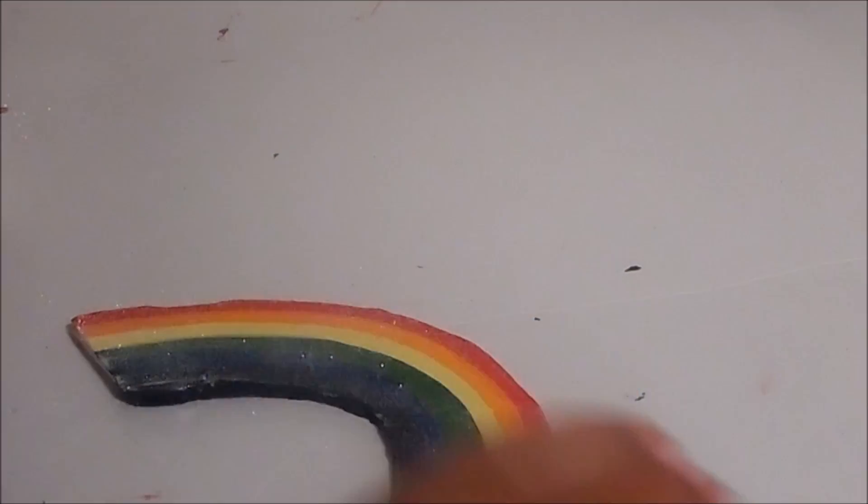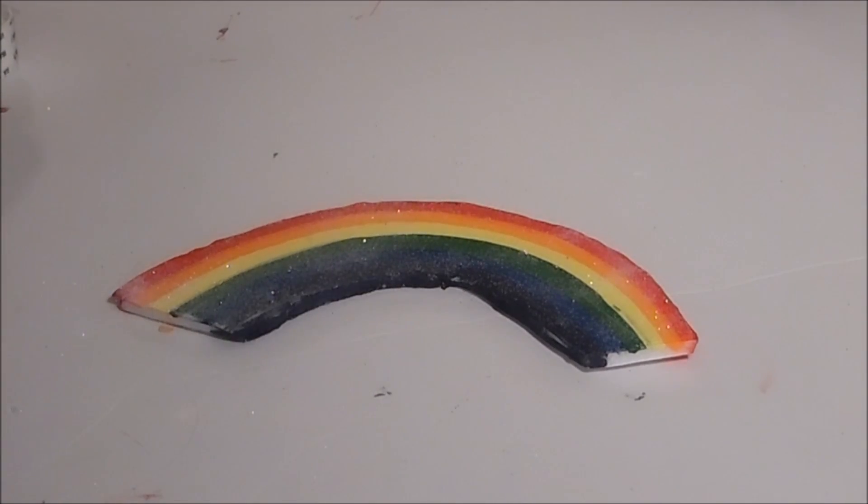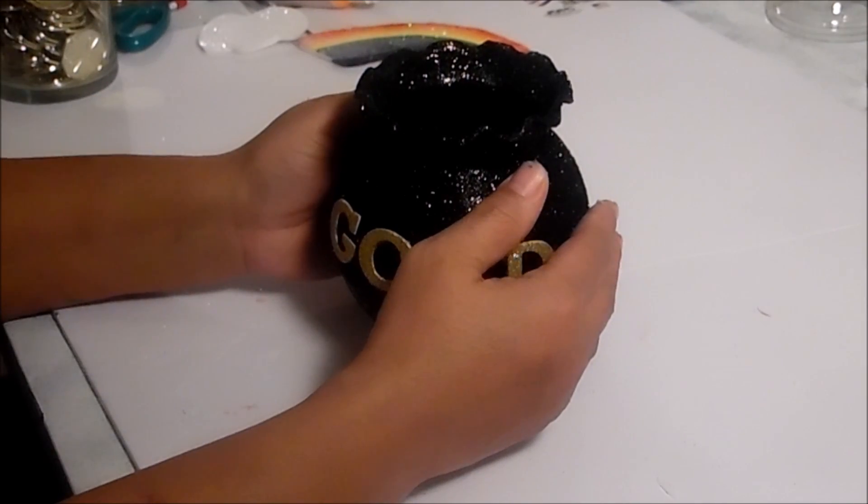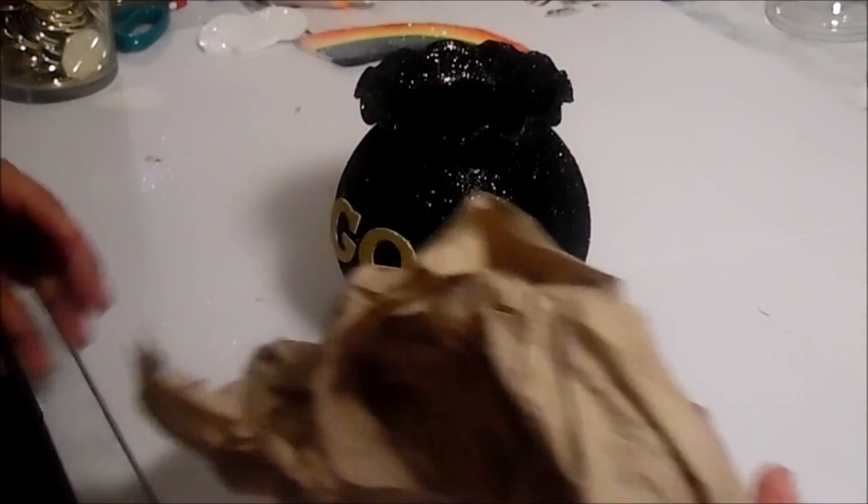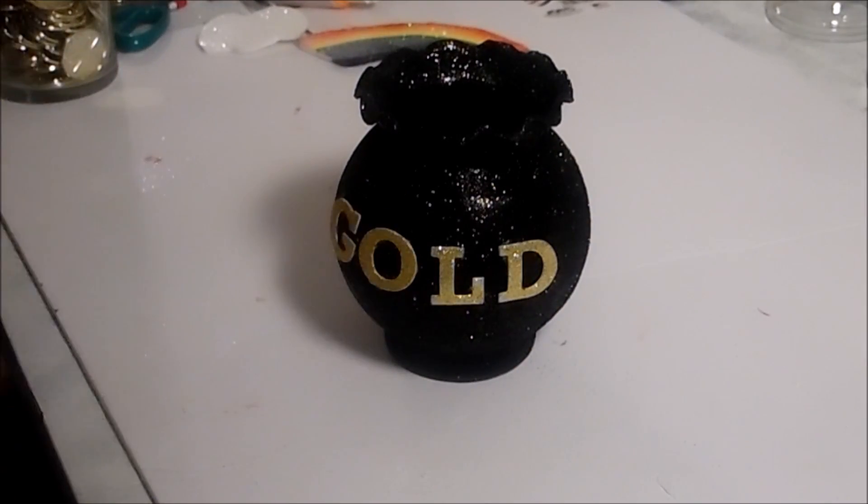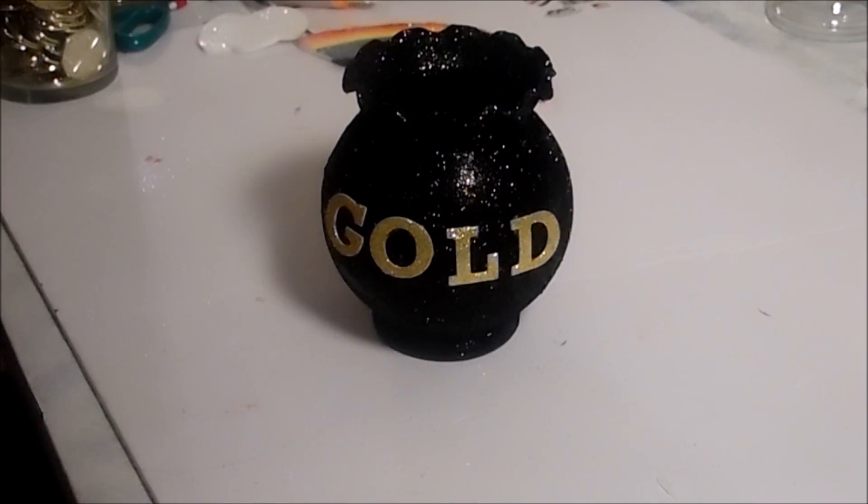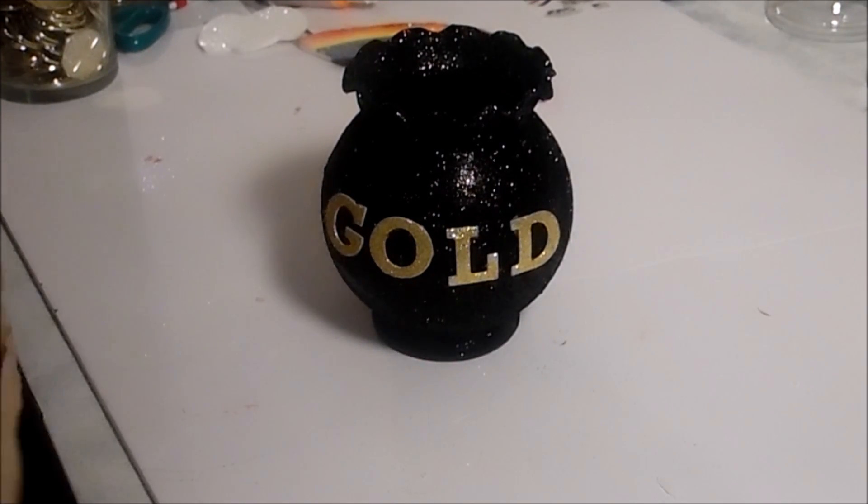You guys, take your time and do a better rainbow than what I've done here. I've put my rainbow and my cloud aside. And now we are going to start putting this together. So the first thing that I want to do, I'm just using some paper, and I'm just going to stuff some in the bottom. And this is just taking up room so you won't have to put many coins on the inside. You don't have to do this, but if you have like five or six packs of those Dollar Tree coins, then you'll be good to go.